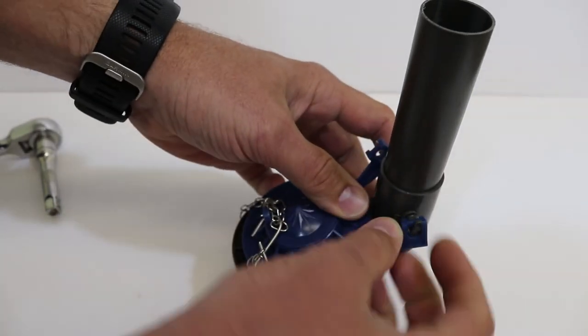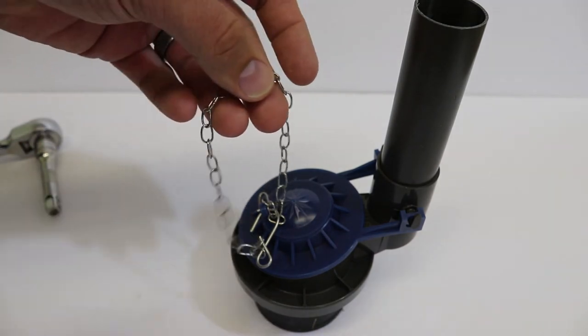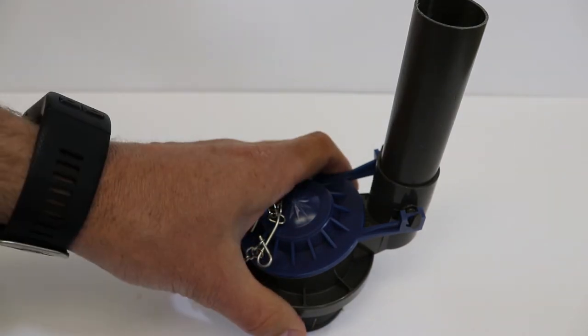Your flapper just goes on like a typical 2 inch flapper and then hooking your chain up to your flush valve or your handle assembly.